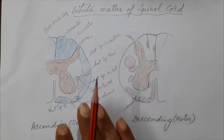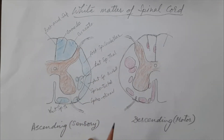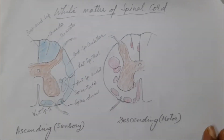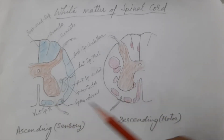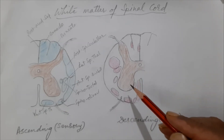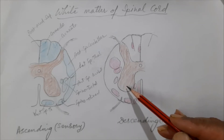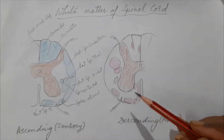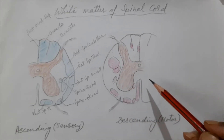This completes the white matter ascending or sensory tracts going toward the brain — some going to the cerebrum via the thalamus (conscious sensation), and some going to the cerebellum (unconscious). Now let us move on to the descending or motor tracts, which start from the cerebrum or lower centers and end at different levels of the spinal cord.